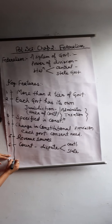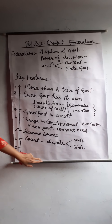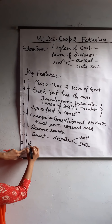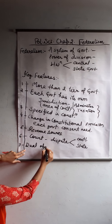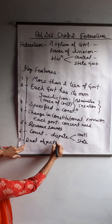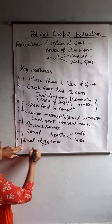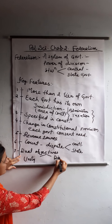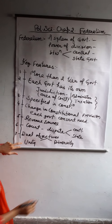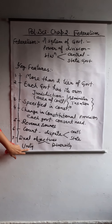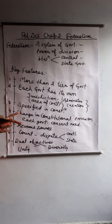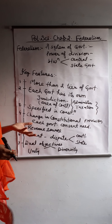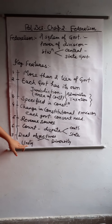The last feature of Federalism is that the federal government has two objectives. The first objective is that unity is maintained, and the other is that diversity is maintained. The central government also ensures there is no problem with unity.